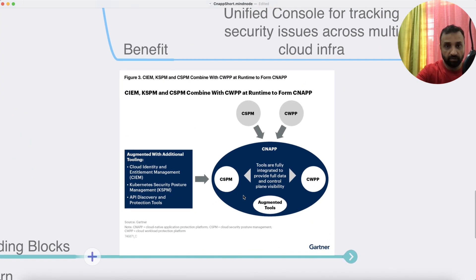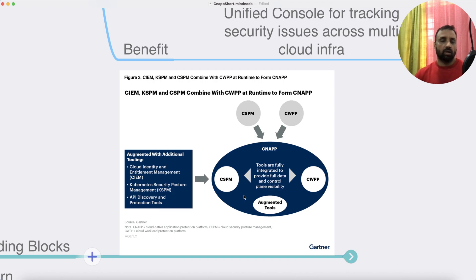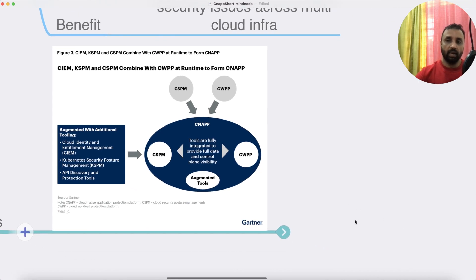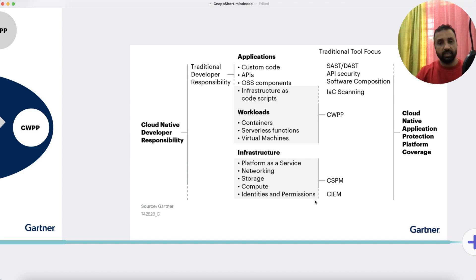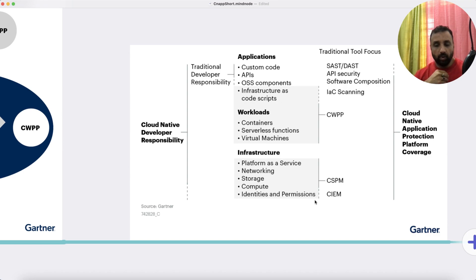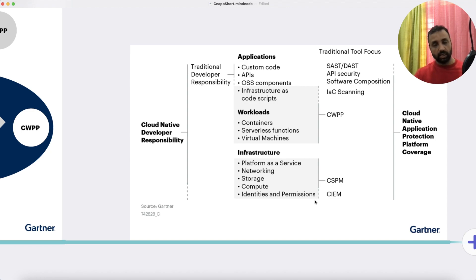The building blocks of CNAP are a collection of technologies: CSPM, CWPP, CIEM, KSPM, and API discovery and protection tools. These technologies started back around 2010–2012 with CSPM and CWPP, and now everything is converging and being known as CNAP. CNAP is essentially a high-level umbrella under which multiple technologies exist. Most people either start with CSPM or take the shift-left or DevSecOps approach, considering it's a best practice to start security early in the application development lifecycle.